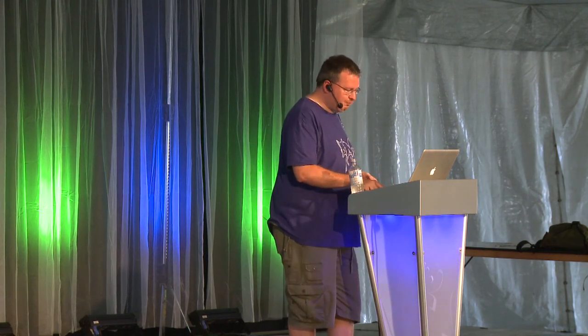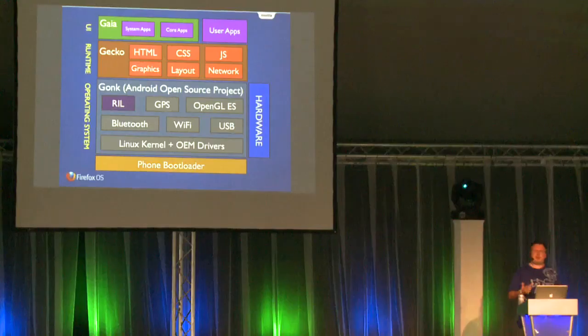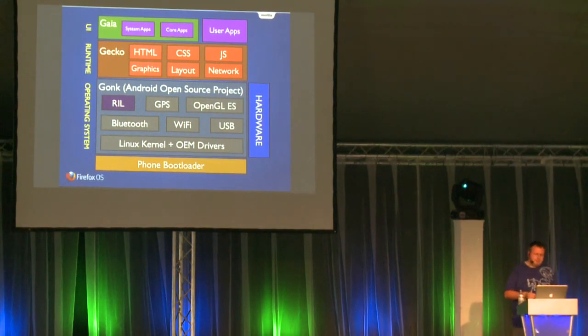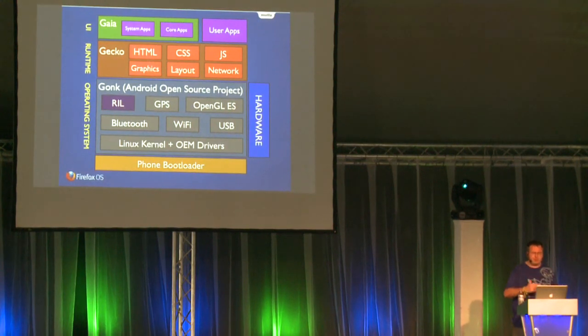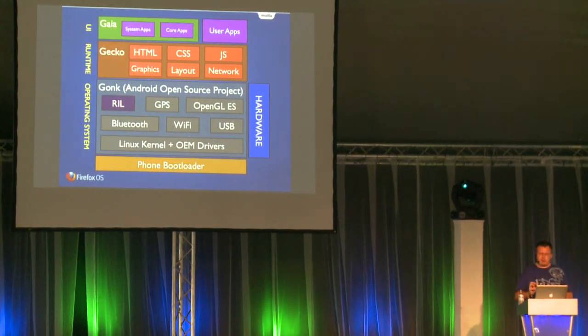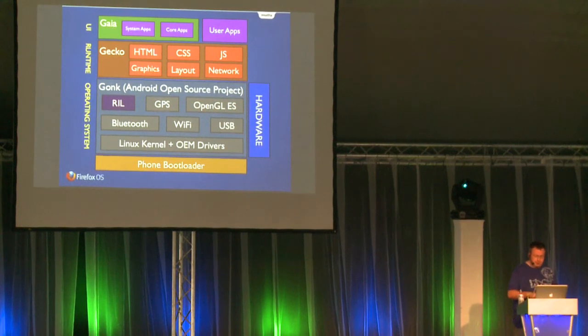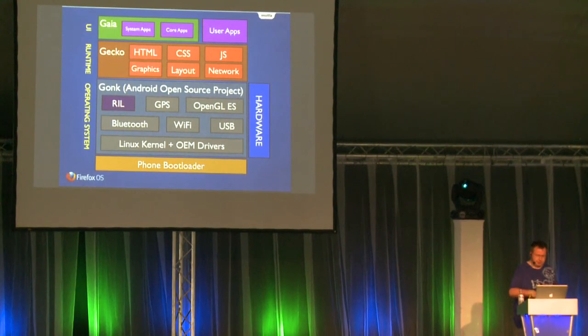Gaia contains the system apps and also the built-in applications I showed at the beginning of this presentation. Next to Gaia are user applications — you can also install your own applications on the device, built using the same technologies. This is the whole stack. Every bit of it is open source, probably even including the bootloader. I'll show you later how you can download this, and with a couple lines of command line code, you can build a whole phone OS.